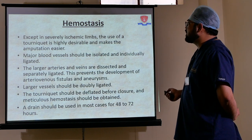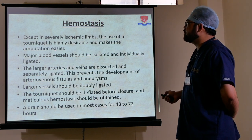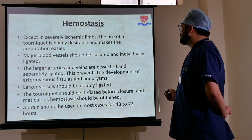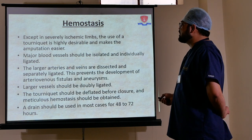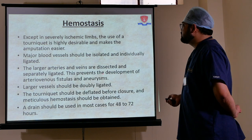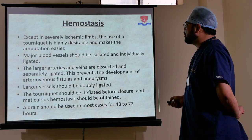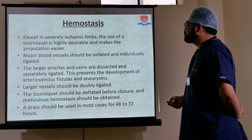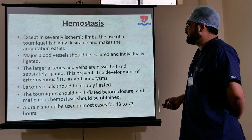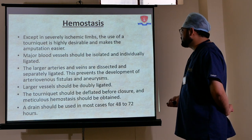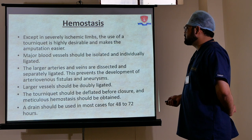Hemostasis: except in severely ischemic limbs, the use of a tourniquet is highly desirable and makes the amputation easier. Major blood vessels should be isolated and individually ligated; larger arteries and veins should be dissected and separately ligated to prevent arteriovenous fistulas and aneurysm formation. Larger vessels should be doubly ligated. The tourniquet should be deflated before closure and meticulous hemostasis obtained. A drain should be used in most cases for 48 to 72 hours.